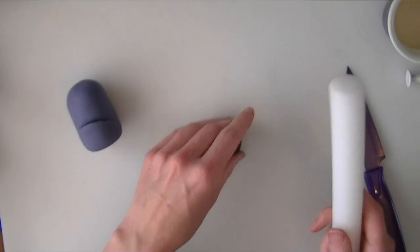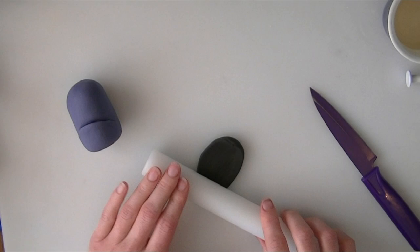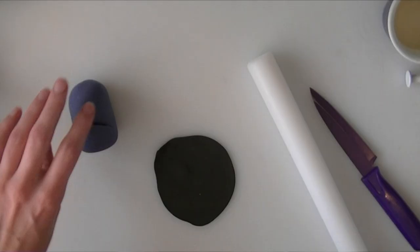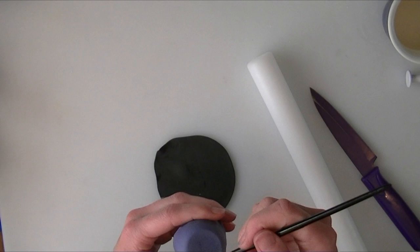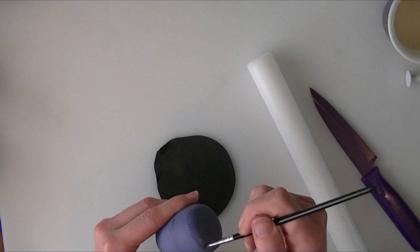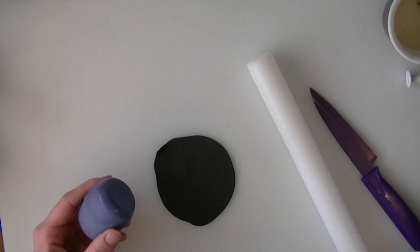I've got a bit of black next for his dungaree. I'm going to roll this out and put a bit of water on the bottom of his body and just around the very bottom edge, and I'm just going to push that onto there.